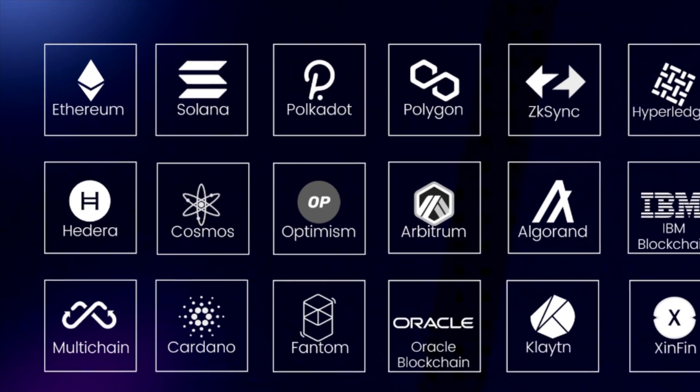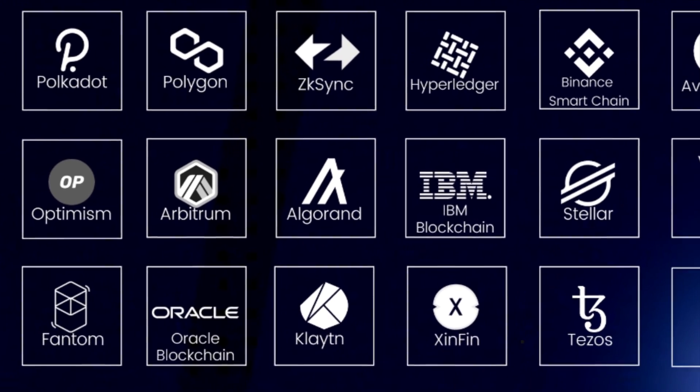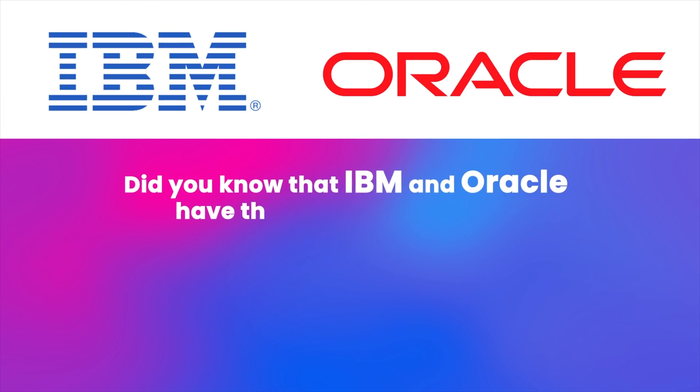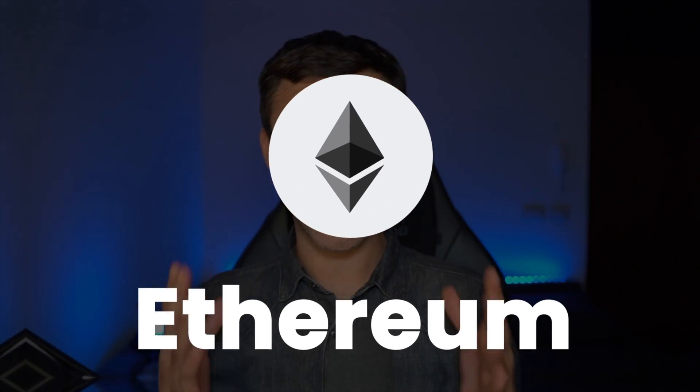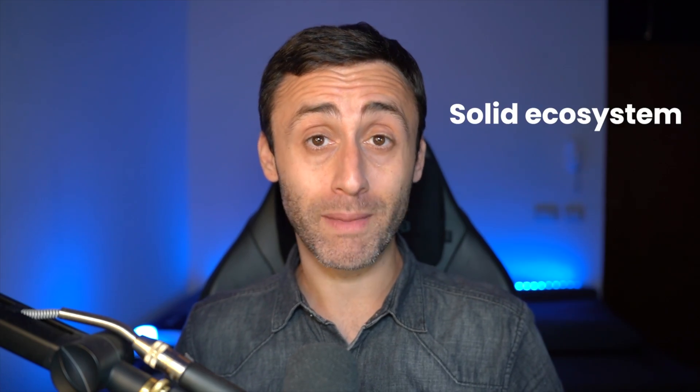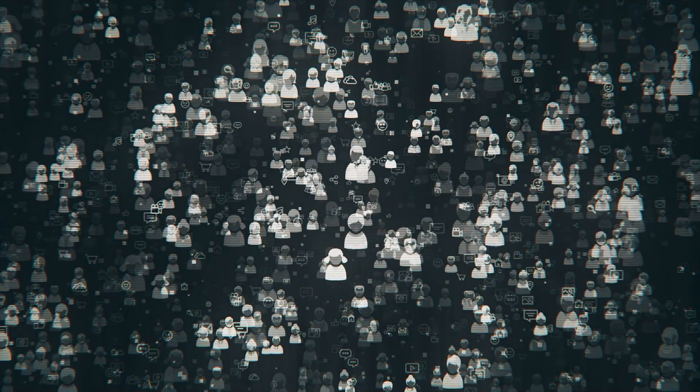And yes, there are many blockchains — Ethereum, Solana, Polkadot, Polygon, etc. Did you know that IBM and Oracle have their own blockchains? So which is the best blockchain to start with? There is not a correct answer to this question, but I recommend to start with Ethereum.